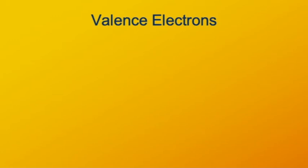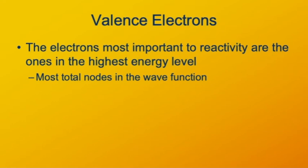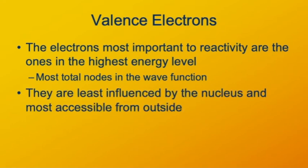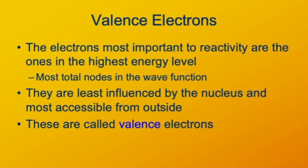The electrons that matter the most to how an atom behaves are the ones with the highest energy, which are the most distant from the nucleus, and the most shielded from the positive charge of the nucleus by the inner electrons. These outer electrons are known as valence electrons.